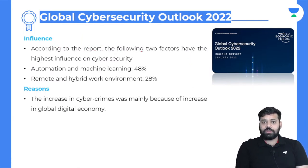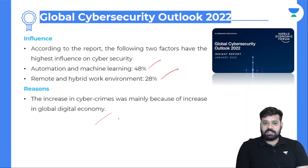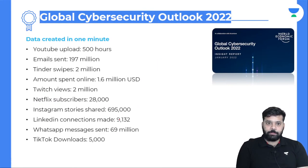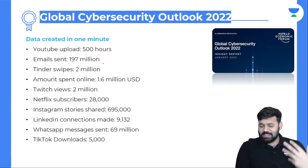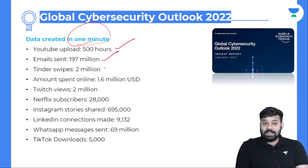According to the report, two factors have the highest influence on cybersecurity: automation and machine learning at 48%, and remote and hybrid work environment at 28%. The increase in cyber threats was mainly due to increases in the global digital economy. For context: in one minute, 500 hours of YouTube content is uploaded, 197 million emails are sent, and 1.6 million US dollars is spent online.